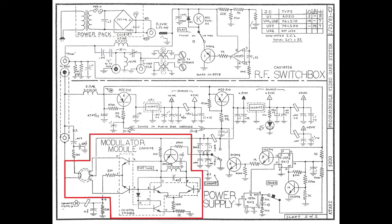The RF modulator that produces the RF channel modulation for channel 2 or 3 passes its signal as shown by the blue trace. The capacitors on the RF switch in the Atari console, shown by the green arrows, allow passage of the signal, while the inductors circled in red on the RF switch in the Atari console schematic block the passage of the RF modulated signal.